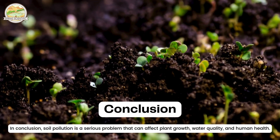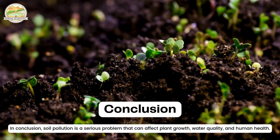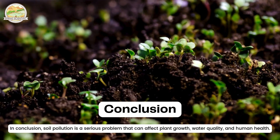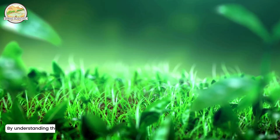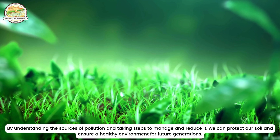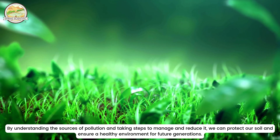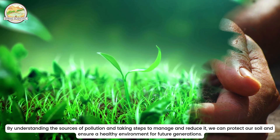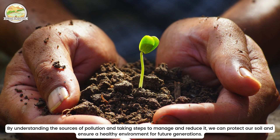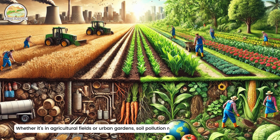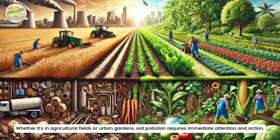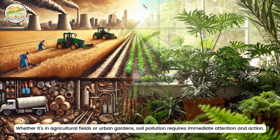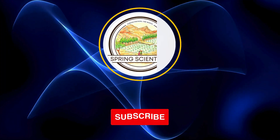In conclusion, soil pollution is a serious problem that can affect plant growth, water quality and human health. By understanding the sources of pollution and taking steps to manage and reduce it, we can protect our soil and ensure a healthy environment for future generations. Whether it's in agricultural fields or urban gardens, soil pollution requires immediate attention and action.